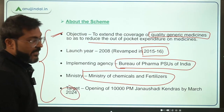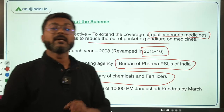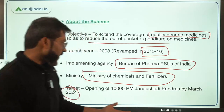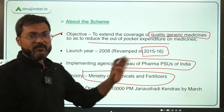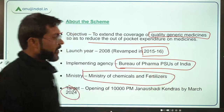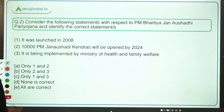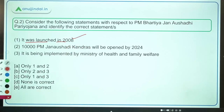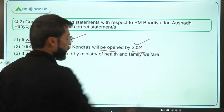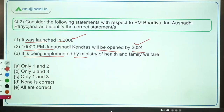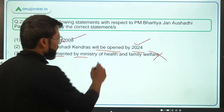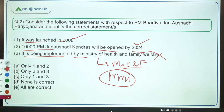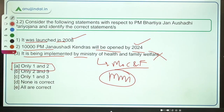Very recently, the government set the target to establish 10,000 Pradhan Mantri Bharatiya Janaushadhi Kendras by March 2024. This target will be easily achieved as around 8,500 Janaushadhi Kendras have already been established. Coming back to the question: the scheme was launched in 2008 — correct. 10,000 PM Jan-Aushadhi Kendras will be opened by 2024 — correct. It is being implemented by Ministry of Chemicals and Fertilizers, not Ministry of Health and Family Welfare. So statements 1 and 2 are correct — Option A is the correct answer.